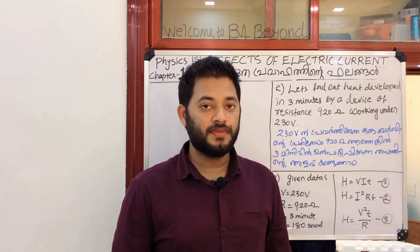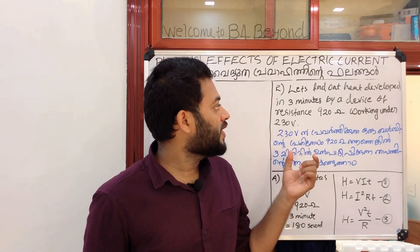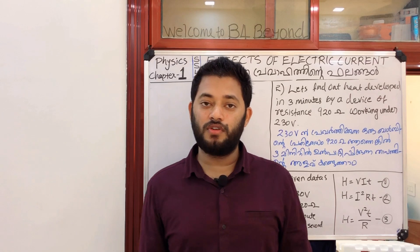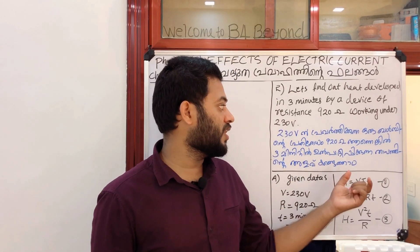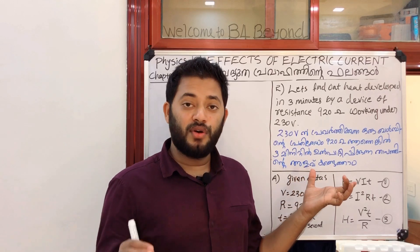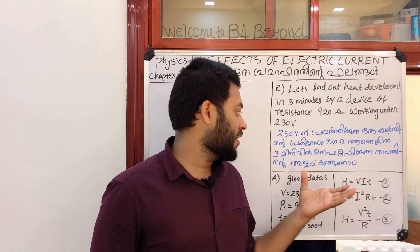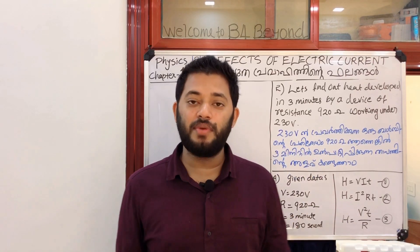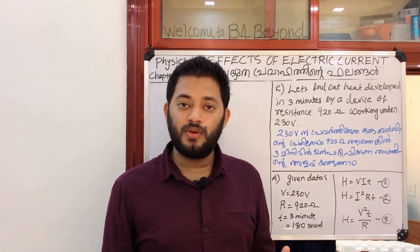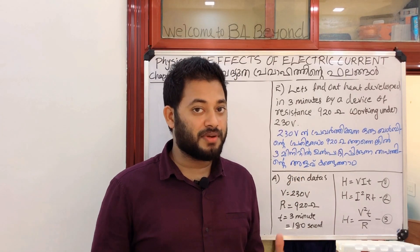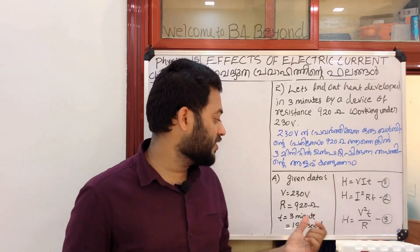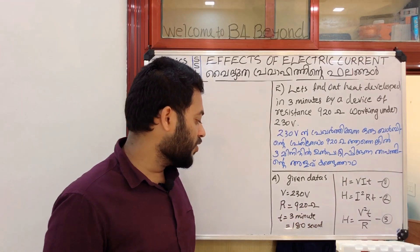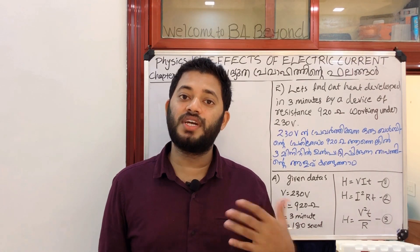Let's find out heat developed in 3 minutes by a device of resistance 920 ohm working under 230 volt. The given data: voltage is 230 volt, resistance is 920 ohm, and time is 3 minutes, which equals 180 seconds.